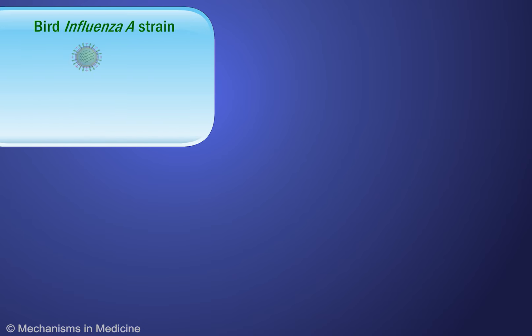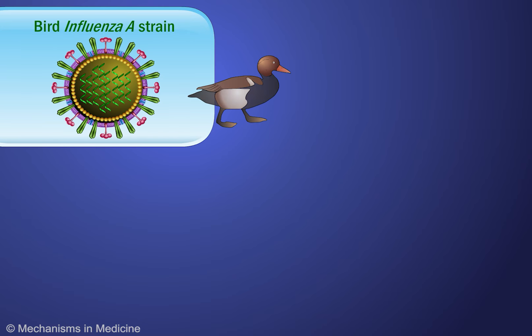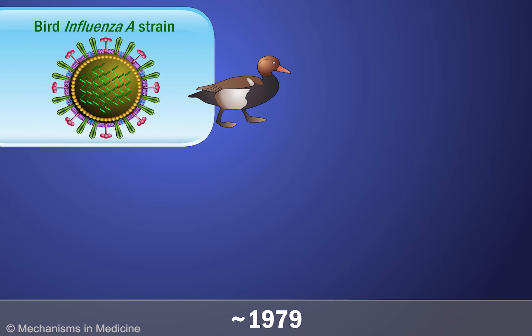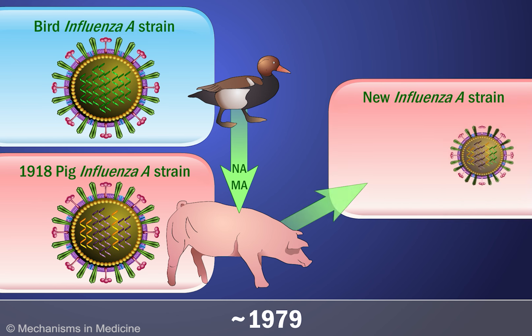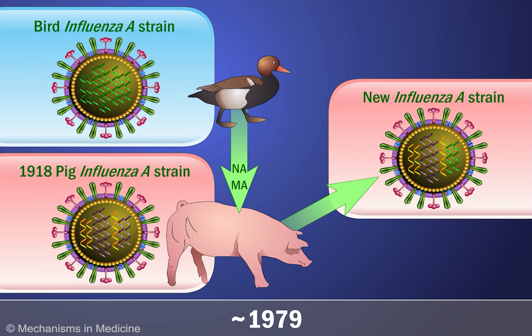Another major antigenic shift of influenza A took place around 1979. The neuraminidase (NA) and matrix (MA) gene segments originated from avian influenza viruses and entered the swine population.